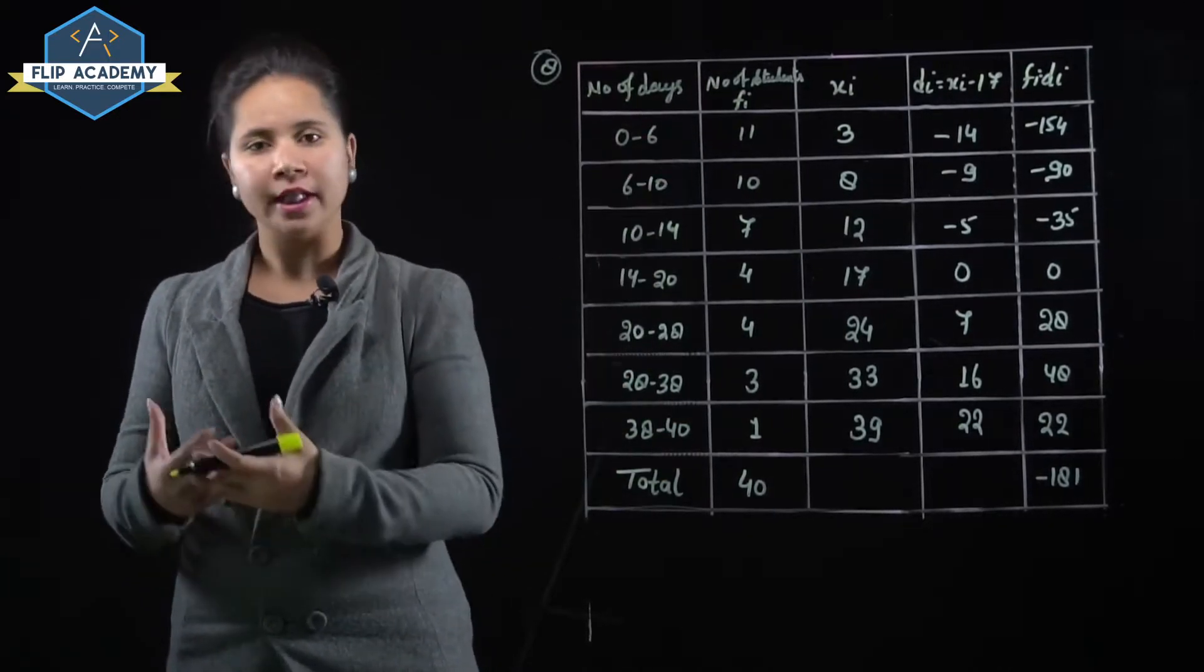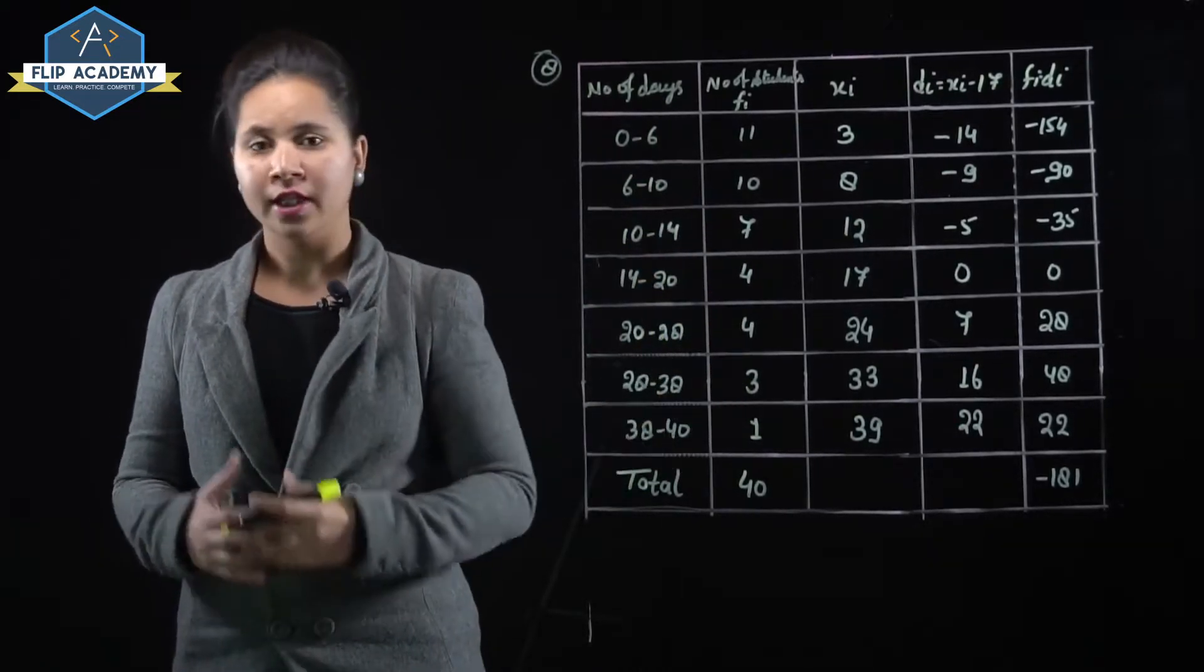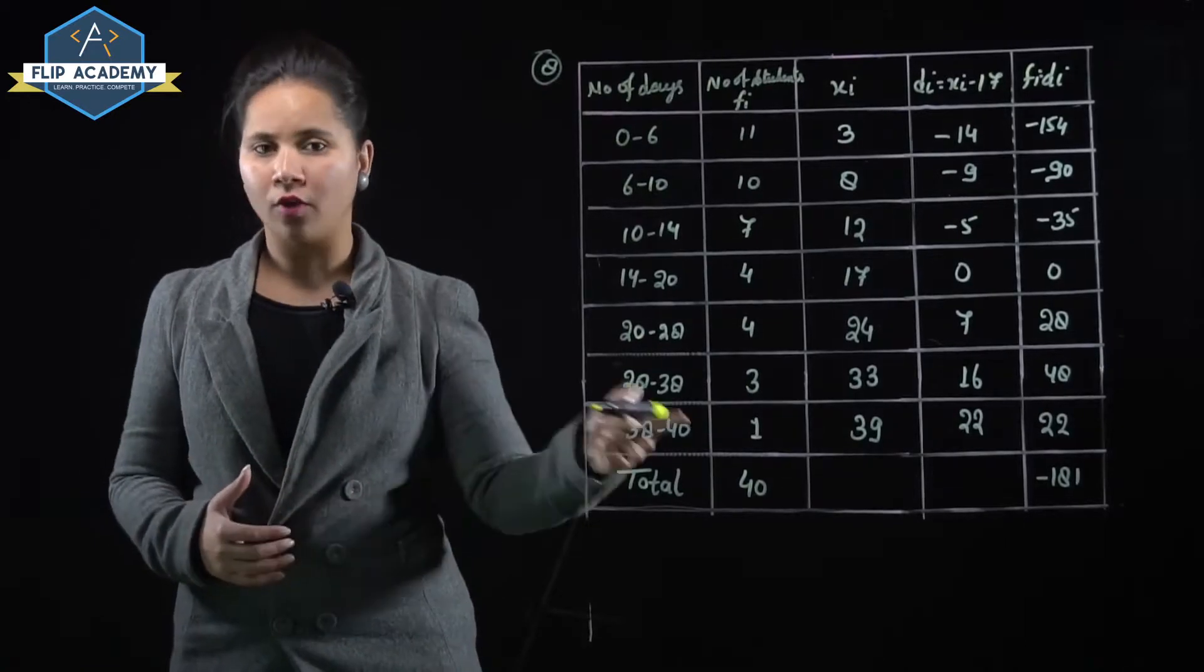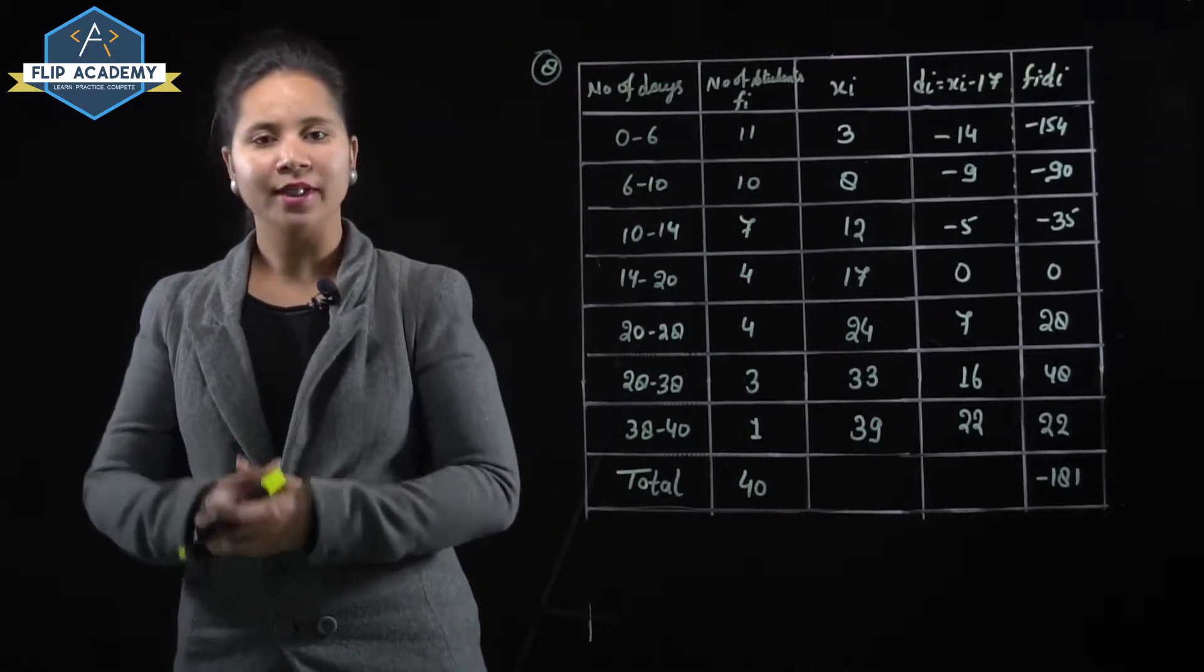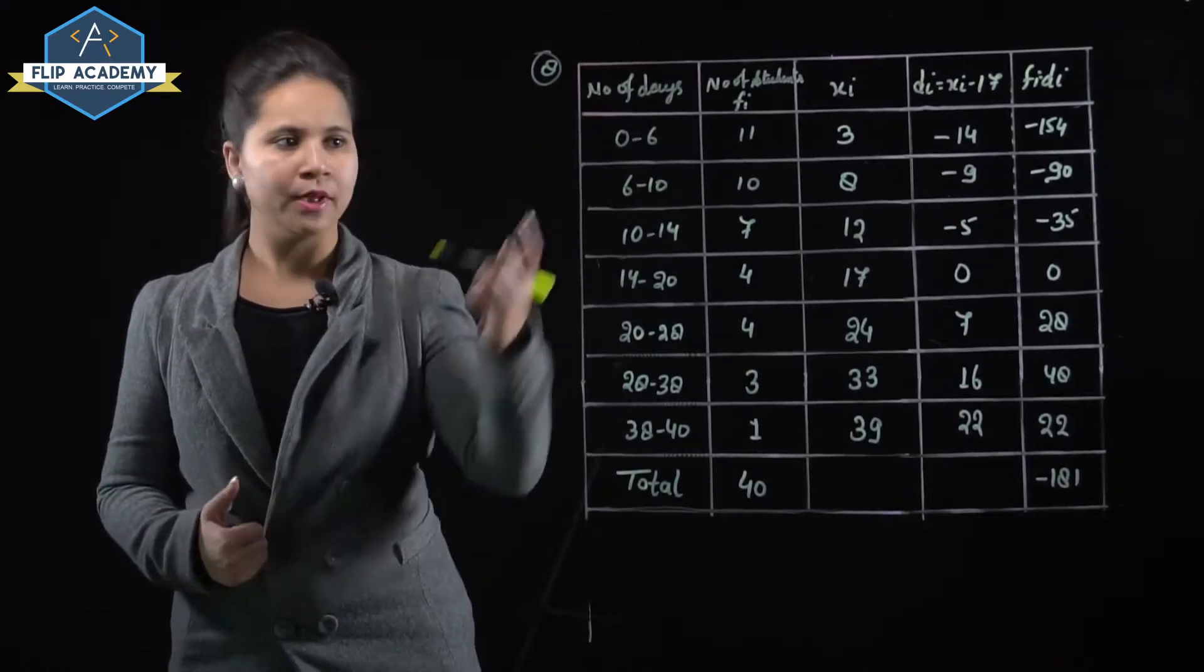Number of students, fi, are 11, 10, 7, 4, 4, 3, and 1. Overall students are 40. Now, xi is the class mark. Class mark is calculated as upper limit plus lower limit divided by 2.